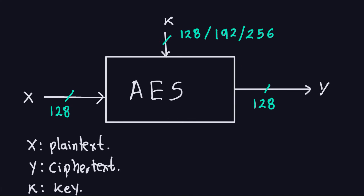Recalling what we did in DES, we talked about rounds, S-boxes, permutations, and similar things — those are going to appear here in the internal structure of AES as well. We're going to have S-boxes, some kind of permutations, XOR addition, and all those kinds of things. For some parts, I'm going to go a little faster since these are concepts we already discussed.